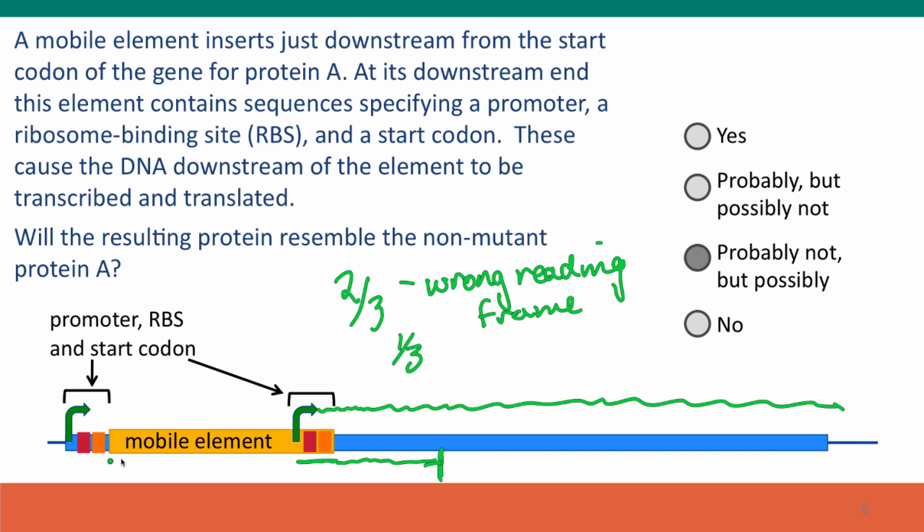And the consequences of this kind of event can be a change in how gene A is regulated. Instead of being regulated by these signals, now it's regulated by these signals. And that can have very interesting and important evolutionary consequences. We see these quite a lot when we look closely at the evidence of how gene regulation has evolved.